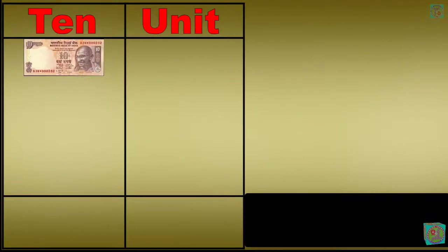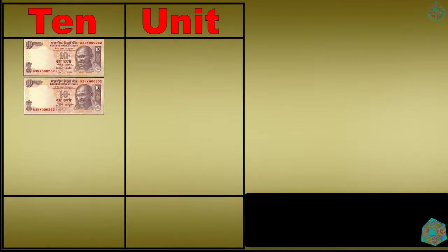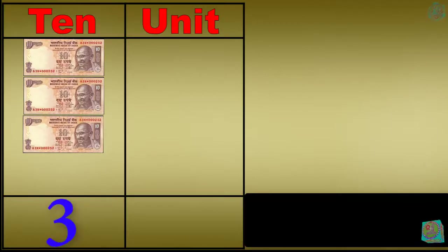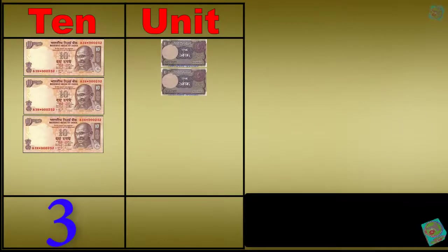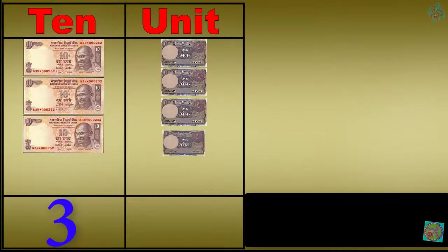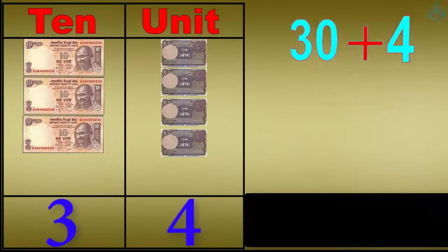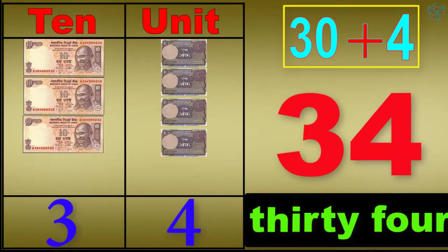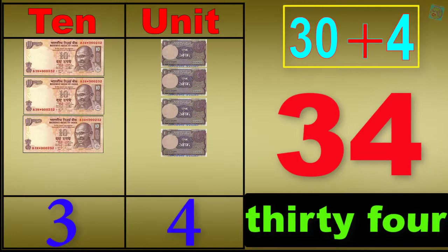1 ten, 2 tens, 3 tens, 3 tens 1 unit, 3 tens 2 units, 3 tens 3 units, 3 tens 4 units. 30 plus 4 equals 34. T-H-I-R-T-Y-F-O-U-R, 34.